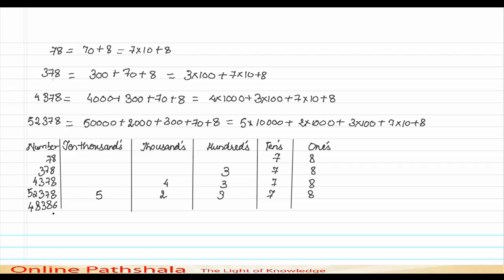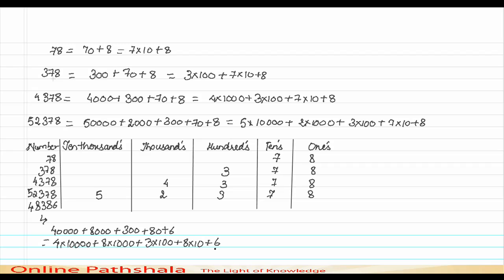Let me take one more example. To expand this number, we need 40,000 plus 8000 plus 300 plus 80 plus 6. The expansion is 4 into 10,000 plus 8 into 1000 plus 3 into 100 plus 8 into 10 plus 6. In the table: 6 goes in the ones place, 8 in tens, 3 in hundreds, 8 in thousands, and 4 in the ten-thousands place.